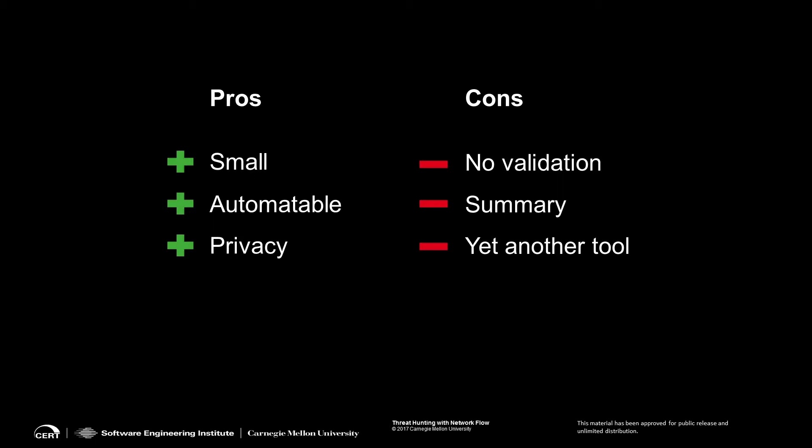I mentioned network profiling up front — that's an important thing to do. But you can also use it for threat hunting. You can find known malicious IPs, look for anomalous traffic, beaconing, exfil, all kinds of stuff. I'm not advocating that we just throw in another tool set and hope for the best. I think the most effective method of threat hunting is to have analysts who are well-trained and capable of critical thinking, and then give them the tools and data they need. I'm a little biased, but I think network flow should be one of those data sets they have access to.